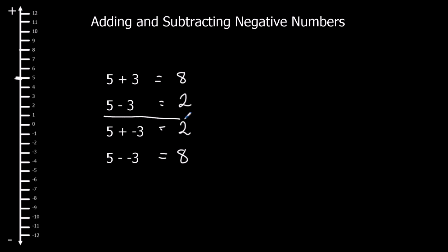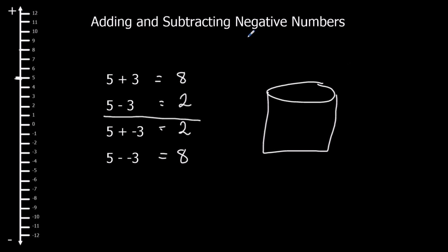With these last two, a lot of people find that very confusing. I'm going to show you something which might help. So imagine I've got a drink, and I'm going to add some ice cubes — say 3 ice cubes. Each of these ice cubes is a negative, so I'm adding negatives. The temperature goes down. If I add negatives, the temperature goes down.